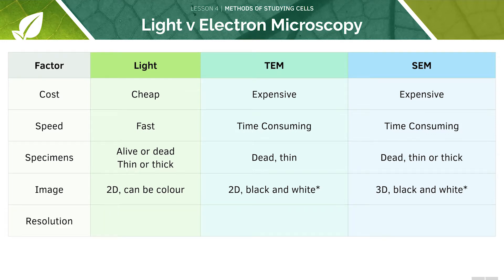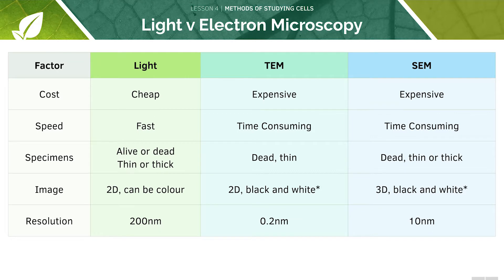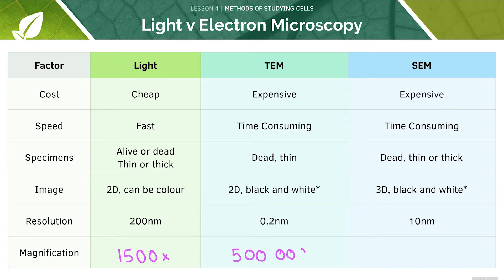Now let's look at resolution and magnification. The resolution of a light microscope is around 200 nanometres, whilst TEM is 0.2 nanometres, and SEM is 10 nanometres. For magnification, light microscopy has a magnification of 1500, whilst it increases further in TEM and in SEM.